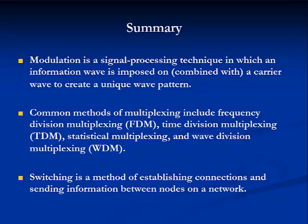In summary, modulation is a signaling process technique in which an information wave is imposed or combined with a carrier wave to create a unique wave pattern. Common methods of multiplexing include frequency division multiplexing, time division multiplexing, statistical multiplexing, and wave division multiplexing. Switching is a method of establishing connections and sending information between nodes on the network. This completes Module 6, so please take Quiz 6 before going on to Module 7.